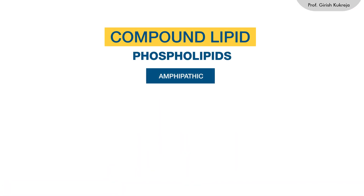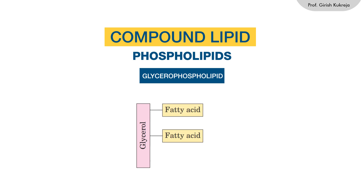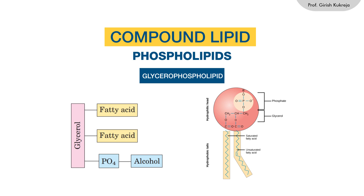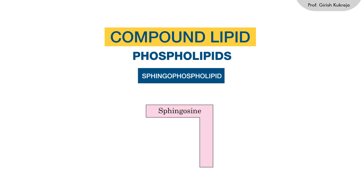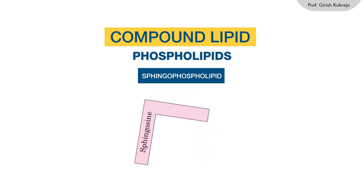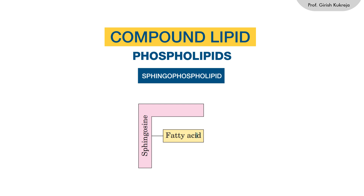Phospholipids are amphipathic molecules. They are of two types: glycerophospholipid and sphingophospholipid. Glycerophospholipid has a glycerol backbone with two fatty acids esterified at C1 and C2, and a phosphate at C3 attached to various head groups like ethanolamine, serine, and choline. The fatty acid portions form the hydrophobic tails while the head group and phosphate form the hydrophilic head, giving the molecule its amphipathic nature. Sphingolipids contain a long-chain amino alcohol called sphingosine as the backbone, with one fatty acid attached via an amide bond. Sphingomyelin, found in nerve cell coverings, is the common example.